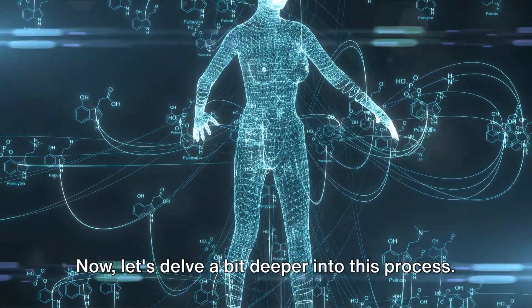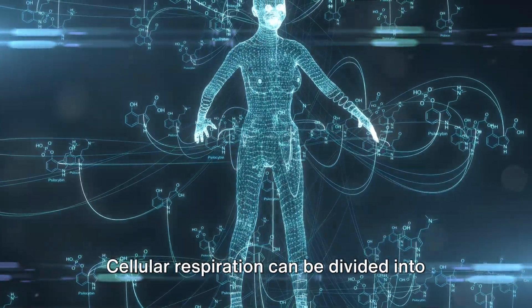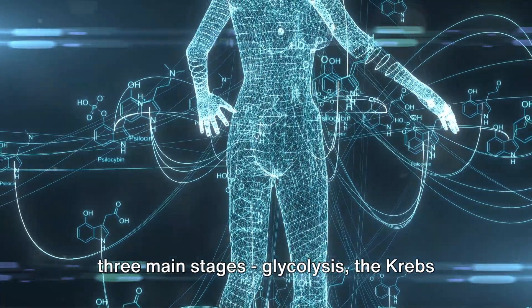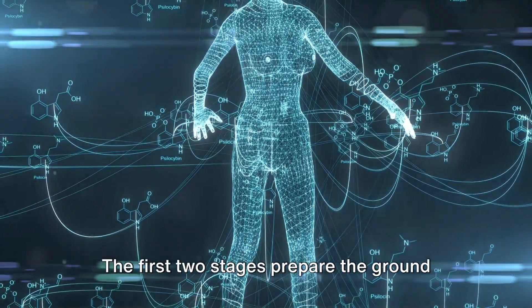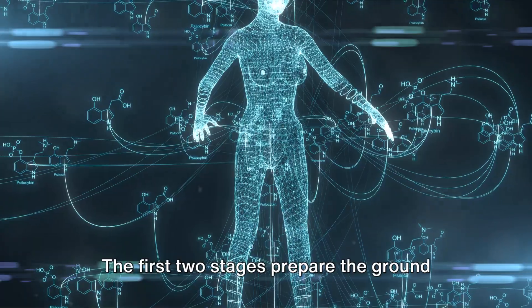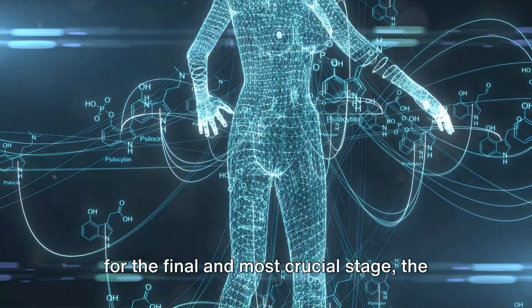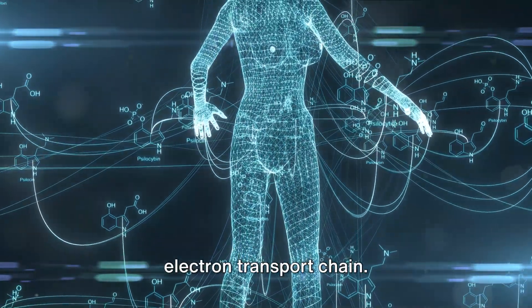Now let's delve a bit deeper into this process. Cellular respiration can be divided into three main stages: glycolysis, the Krebs cycle, and the electron transport chain. The first two stages prepare the ground for the final and most crucial stage, the electron transport chain.